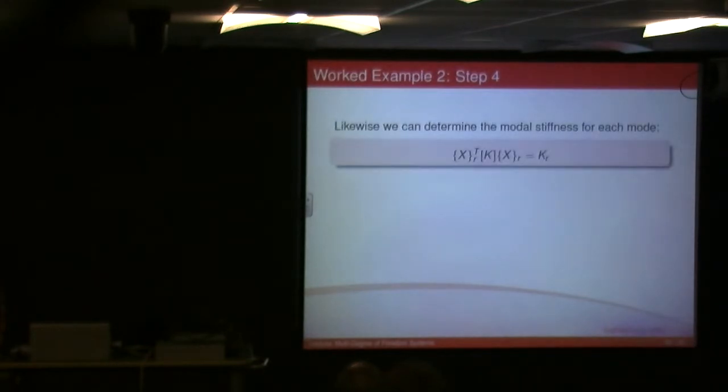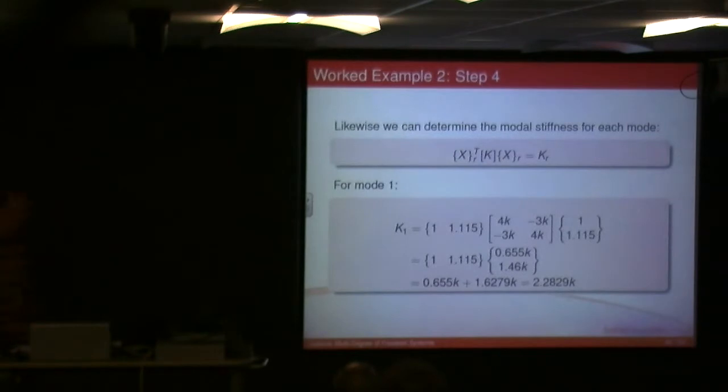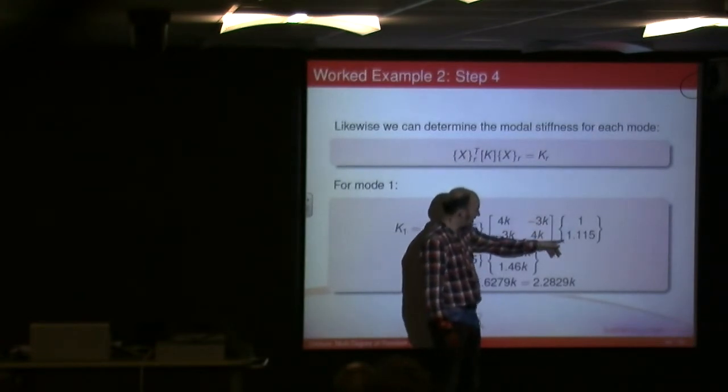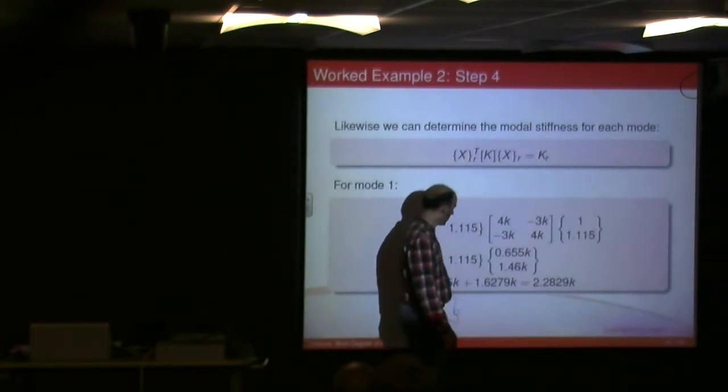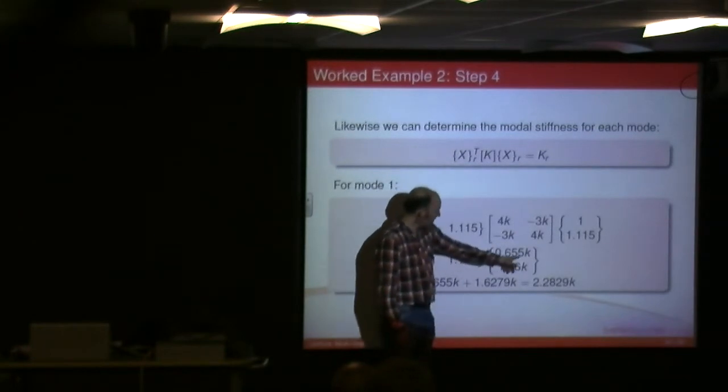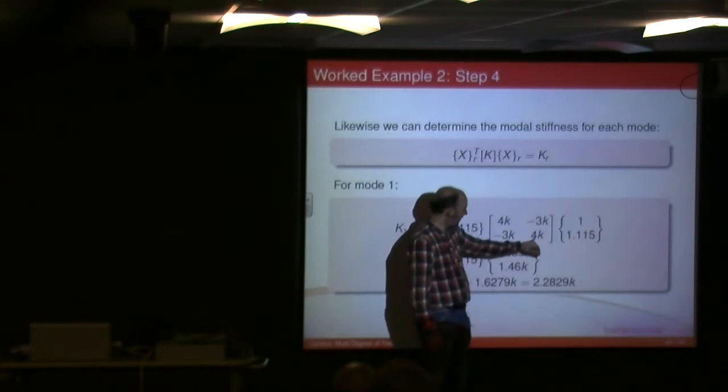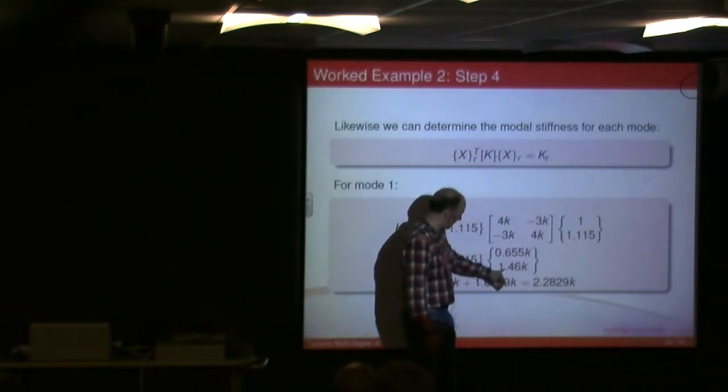And you can do the same thing for the stiffnesses to get kr. I go through the same process. I won't go through it, but basically obviously here we've got 4k times by 1 minus 3k times by 115, which will give me this term. You add them together. I've got minus 3k times by 1 plus 4k times by 0.115, and that will give me this term.